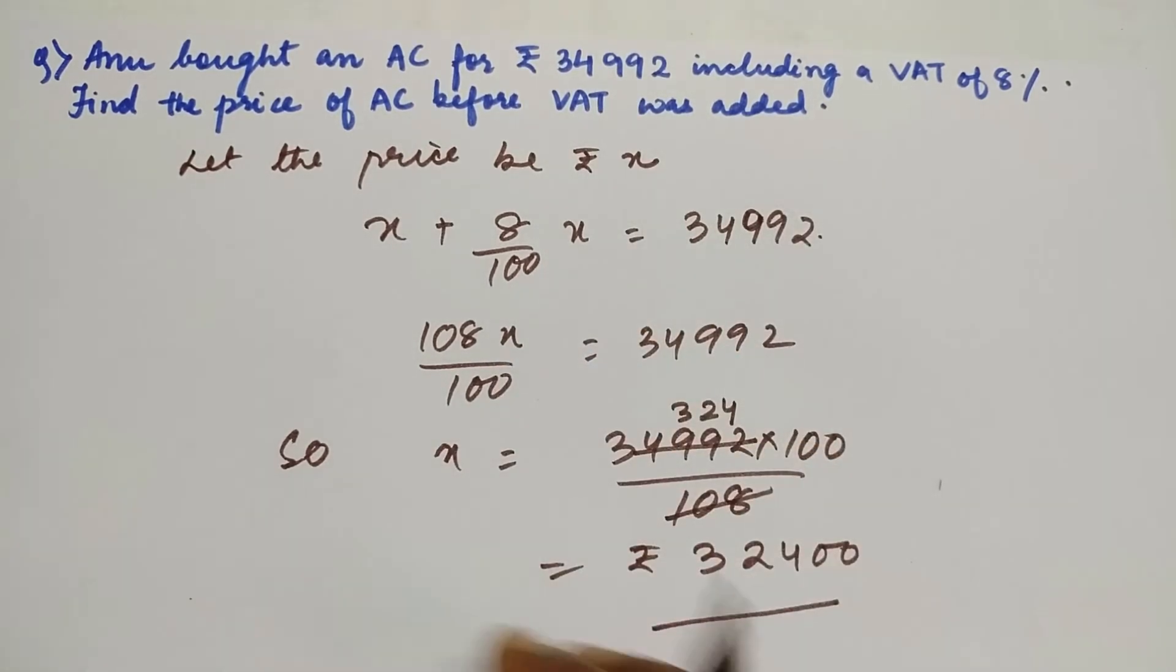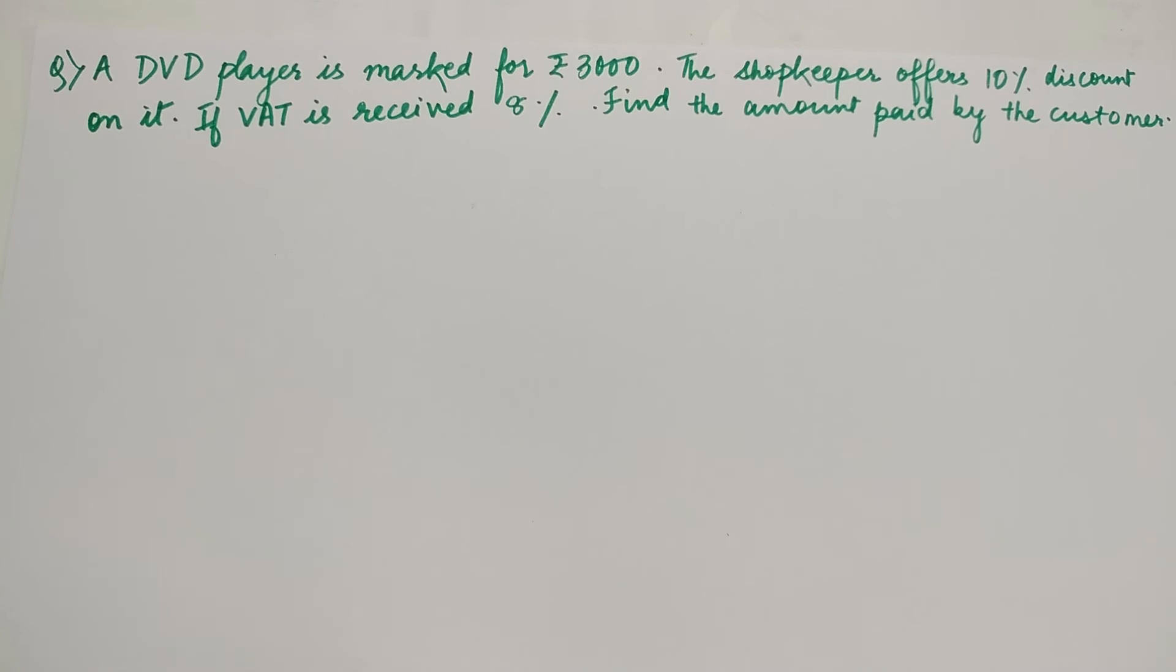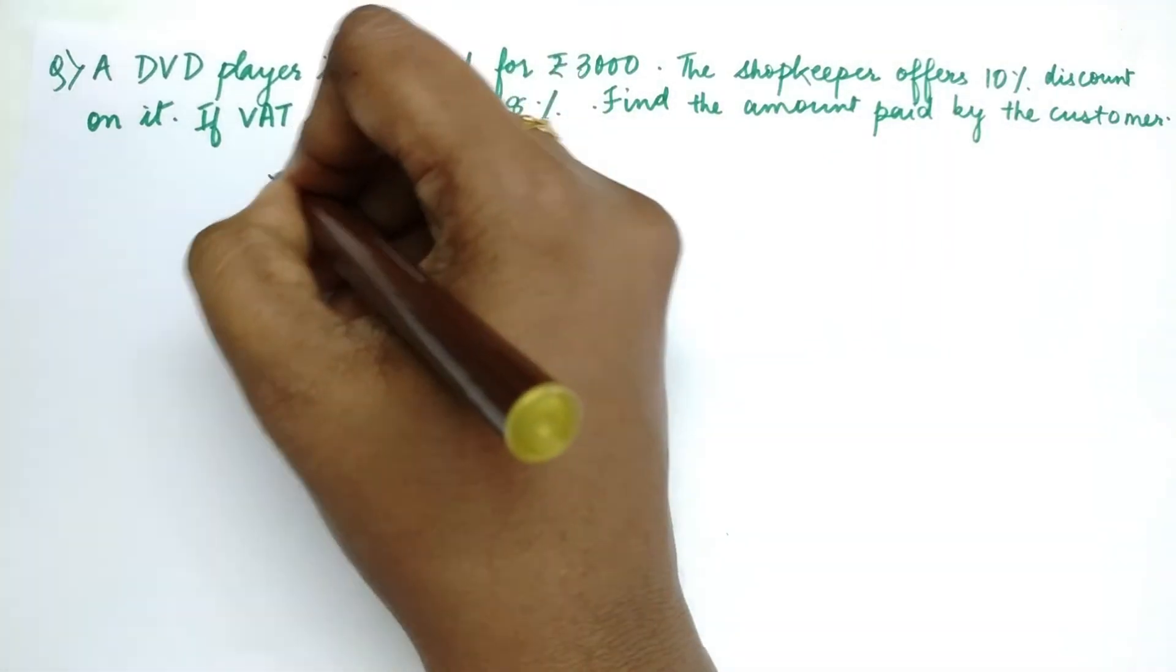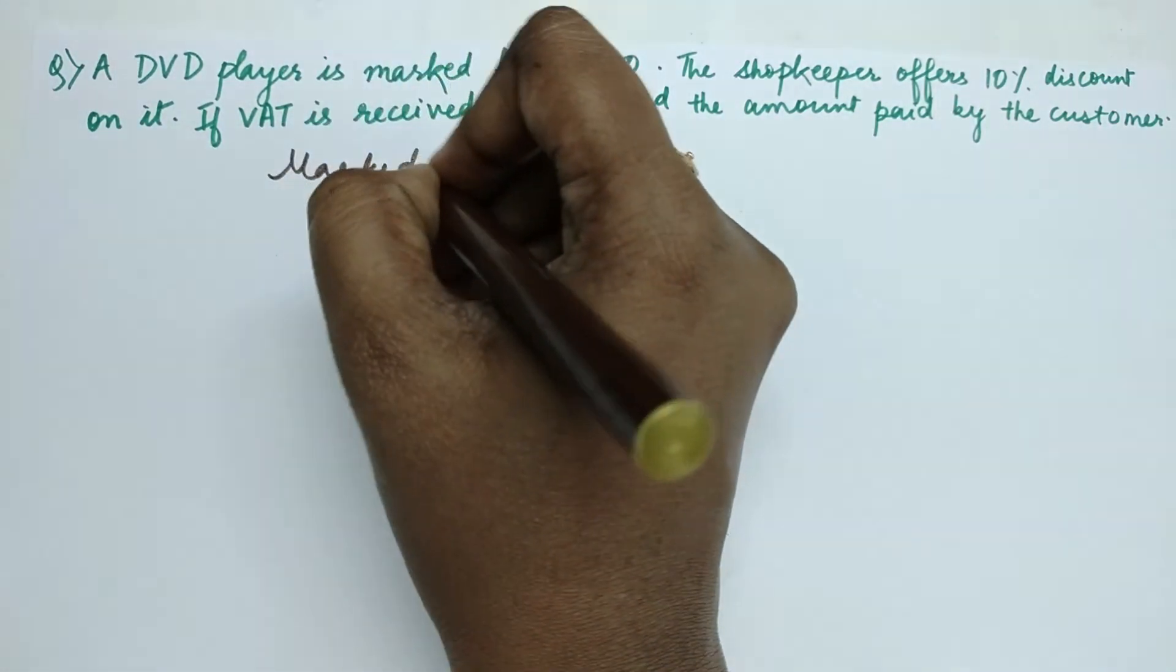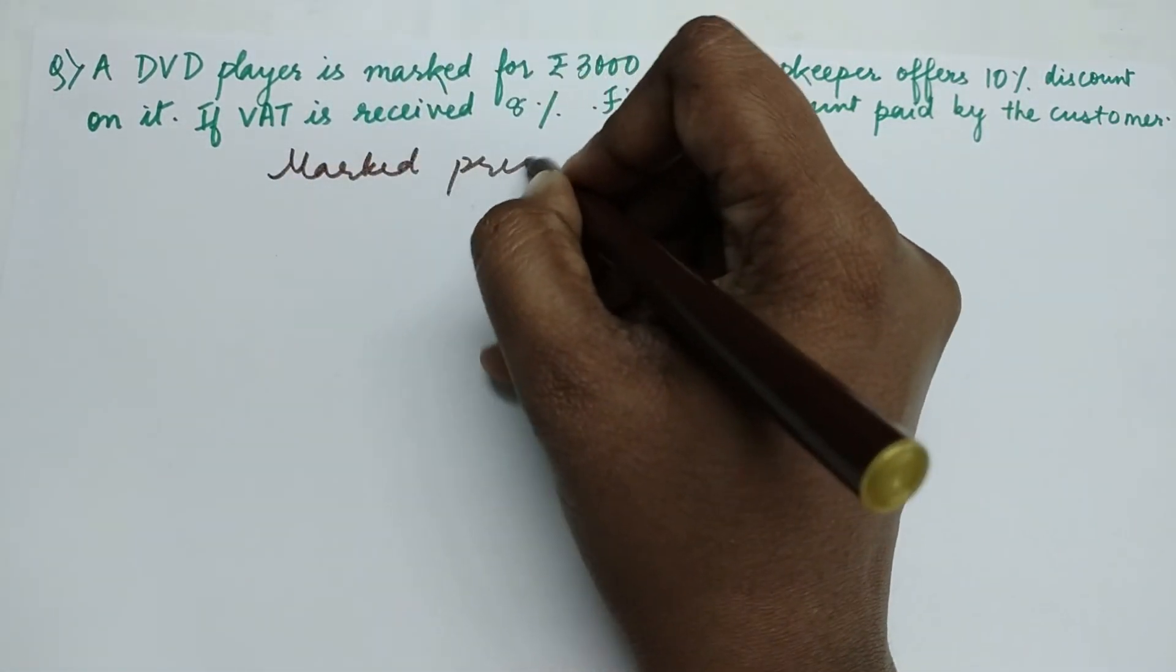The next question is a DVD player is marked for ₹3,000. The shopkeeper offers 10% discount on it. If VAT is received at 8%, find the amount paid by the customer. So here again this is similar to the question taken before. The marked price is ₹3,000.